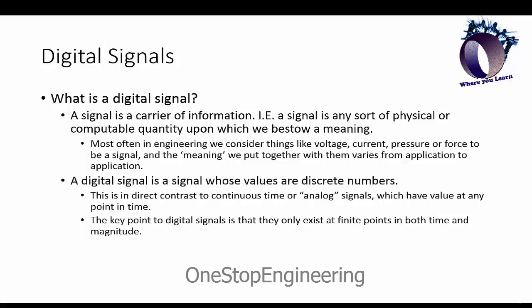First we need to define what exactly a digital signal is. As we know from analog electronics, a signal is a carrier of information. In reality, it is any sort of physical quantity upon which we bestow meaning. Most often in engineering we are talking about things like voltage or current, and the meaning we associate with the signal varies based upon an application.